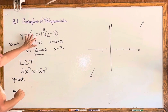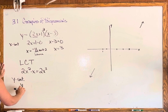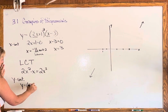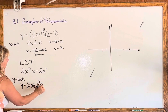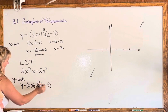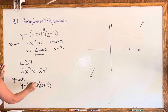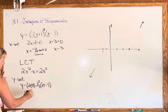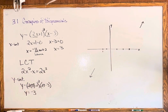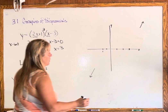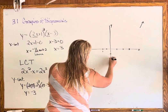The last thing we have is the y-intercept, so we plug in 0 for x. We have y equals 2 times (0+1) squared times (0-3). Those terms simplify: 1 squared is just 1, times negative 3, so the y-intercept is going to be negative 3. We can put that on the graph.